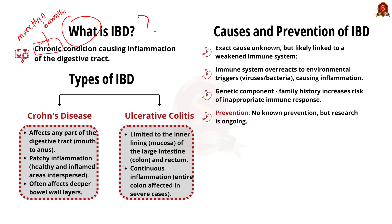There are two main forms of IBD. First is Crohn's disease, which can affect any part of the digestive tract from mouth to anus. Inflammation can be patchy, with healthy tissues interspersed with inflamed areas, and it often affects the deeper layers of the bowel wall. The second form is ulcerative colitis, which is limited to the inner lining — the mucosa — of the large intestine (colon and rectum). The inflammation is continuous, affecting the entire colon in severe cases.